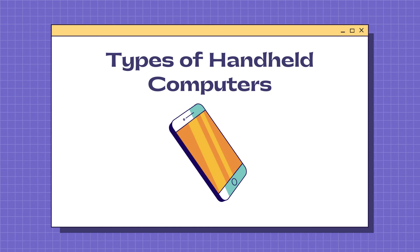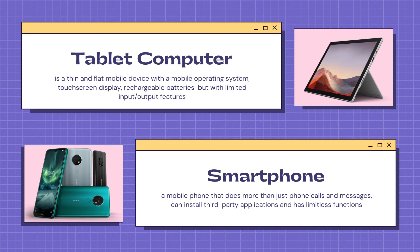The tablet is a thin and flat mobile device with a mobile operating system, touchscreen display, and rechargeable batteries, but with limited input and output features. The smartphone is a mobile phone that does more than just phone calls and messages — it can use third-party applications and has a wide range of functions.